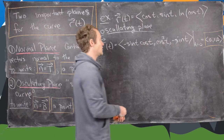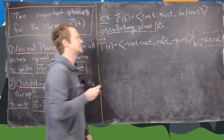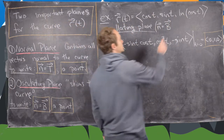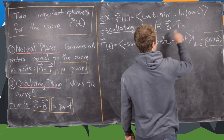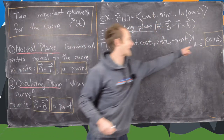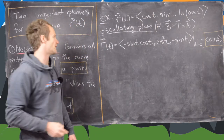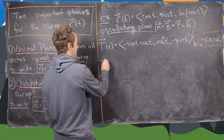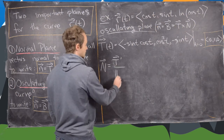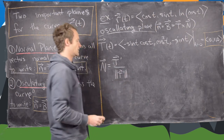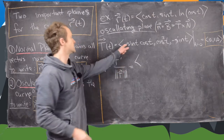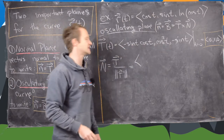Our goal is to get the binormal vector. The normal vector that defines the osculating plane is the binormal vector of the curve, which is given by the unit tangent vector crossed with the normal vector of the curve. We have the unit tangent vector at our point, and now we need the normal vector, which is defined by the derivative of the tangent vector divided by the magnitude of that derivative — that makes it a unit normal vector. Let's take the derivative of each component of this tangent vector, and note we'll need to use the product rule.